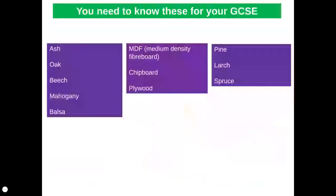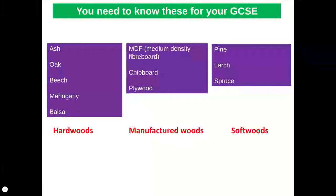For our GCSE, we need to know these three different types of timber classifications and we need to know these timbers in each group. For hardwood, we need to know ash, oak, beech, mahogany, and balsa. For manufactured woods, MDF, chipboard, and plywood. And for softwoods, pine, larch, and spruce. In this video, I'm not going to go through all of these timbers. We'll just take a few from each different classification.